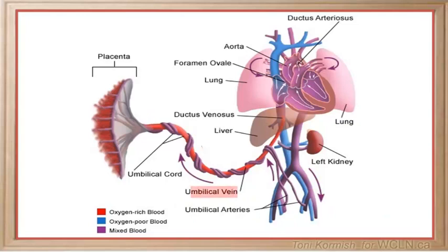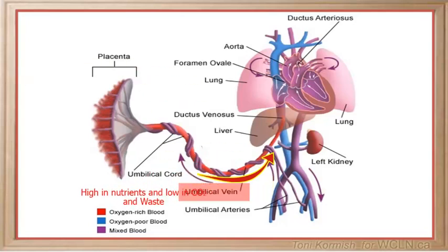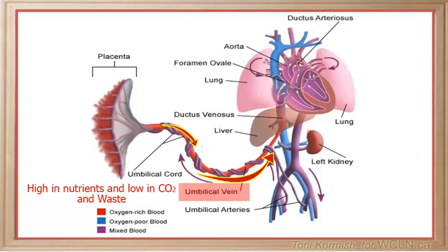The function of veins is to carry blood back to the heart, so the umbilical vein carries freshly oxygenated blood — high in nutrients and low in carbon dioxide and waste — from the placenta back to the fetus.